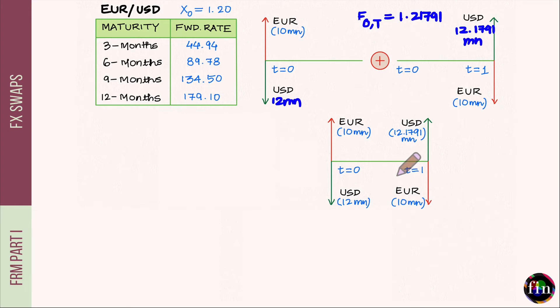The second thing to note is that the exchange rate which connects the two legs at any given date is different. The exchange rate connecting the first leg is the spot exchange rate. The exchange rate connecting the second leg is the forward exchange rate.